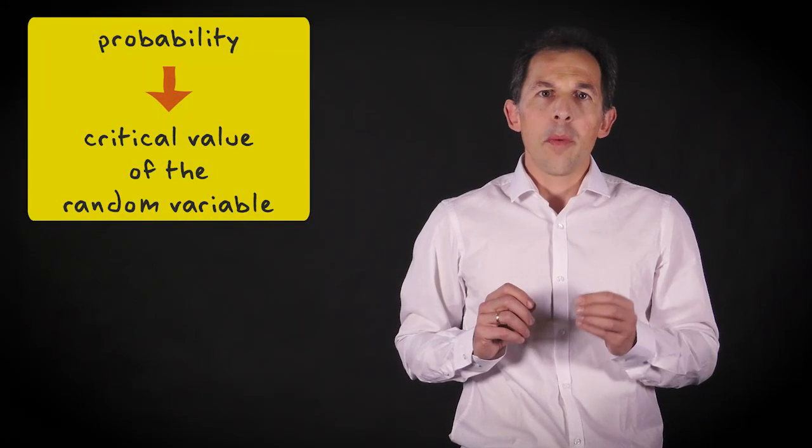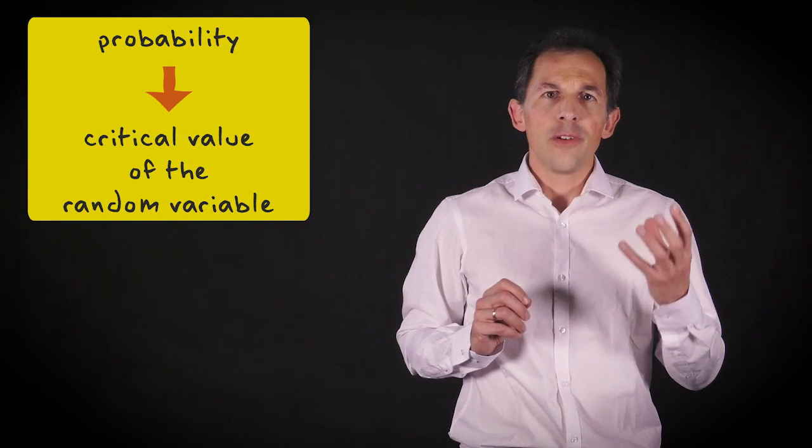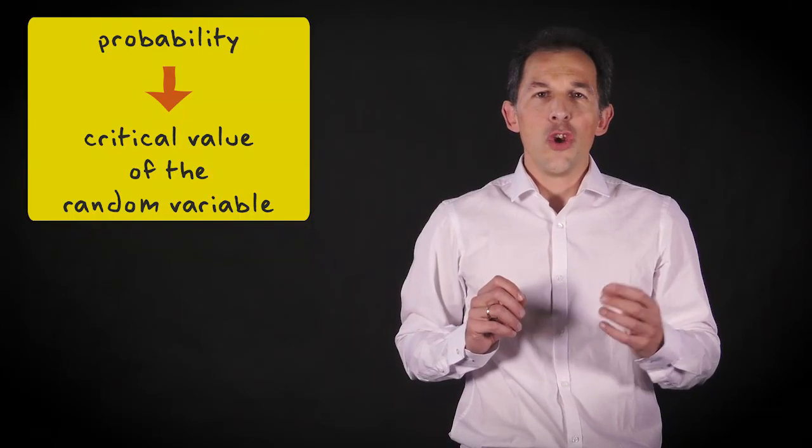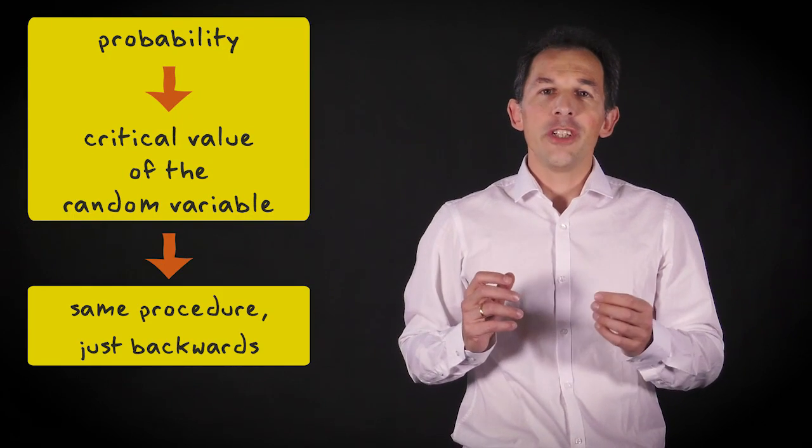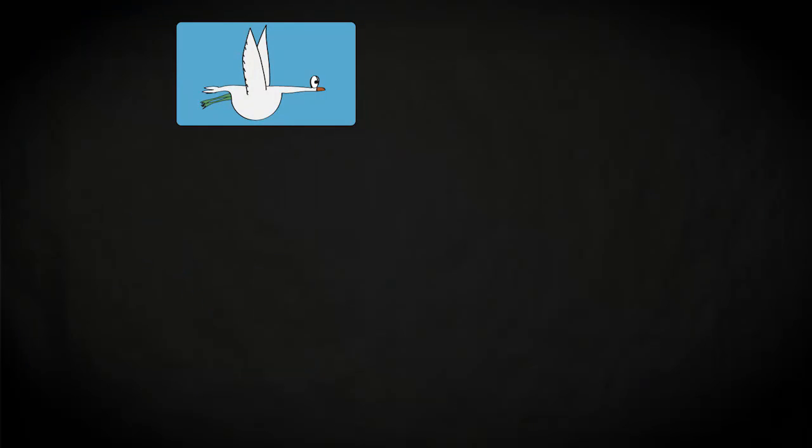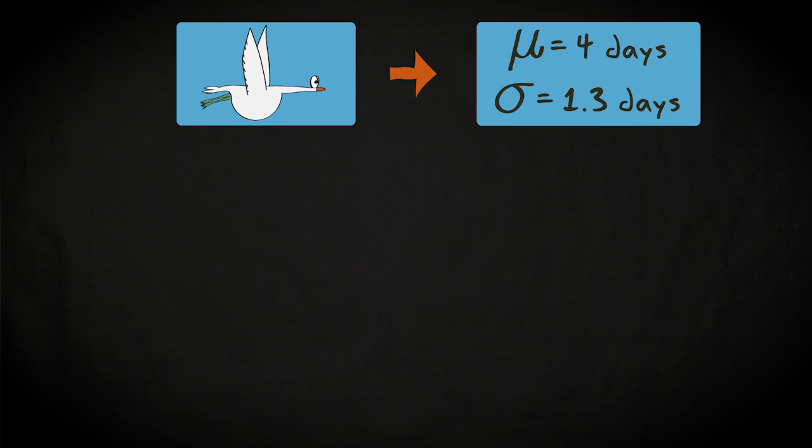So, what if you would have a probability in mind and would like to find the corresponding critical value of the random variable? No worries. It's almost the same procedure, just backwards. Let's take the migration example once again, to illustrate this inverse procedure.